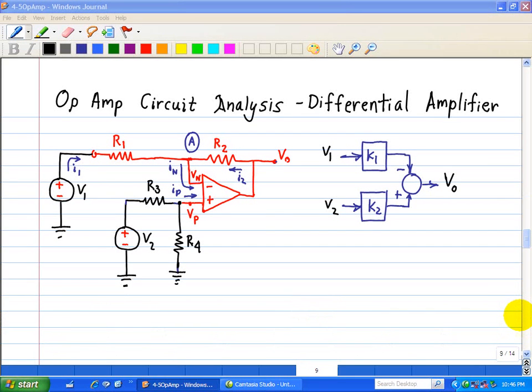The circuit shown here is called a differential amplifier or subtractor. And like the summer, this circuit has two inputs.